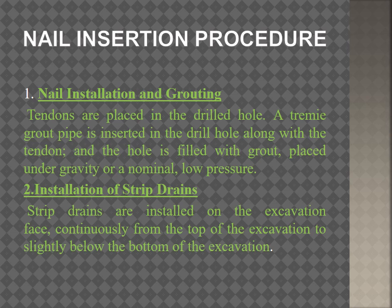The nail insertion procedure is a two-stage process. In the first stage, nail installation and grouting are carried out: tendons are placed in the drilled hole, a tremie grout pipe is inserted along with the tendons, and the hole is filled with grout under gravity or nominal low pressure, usually 5 to 10 psi. If hollow bars are used, the drilling and grouting operations take place simultaneously.